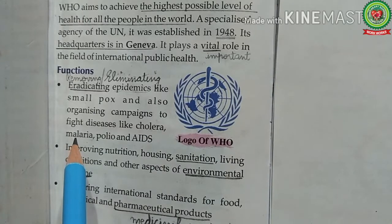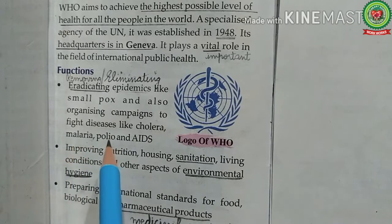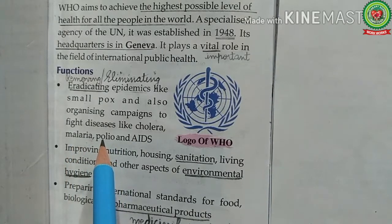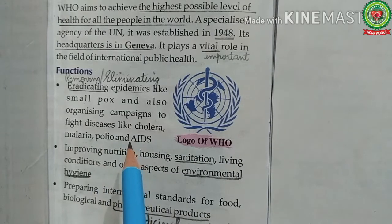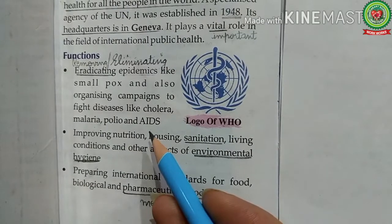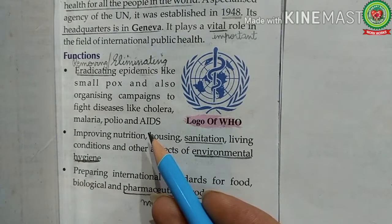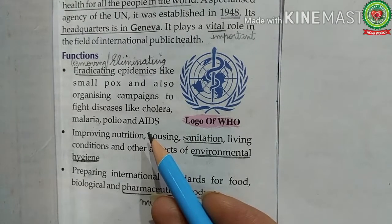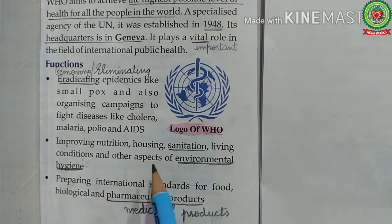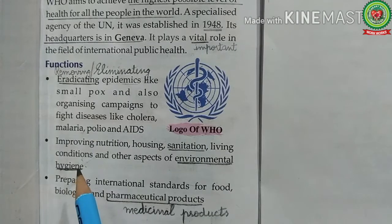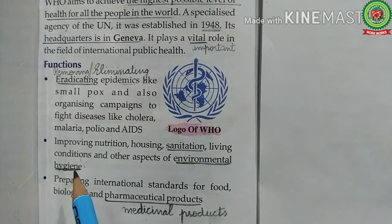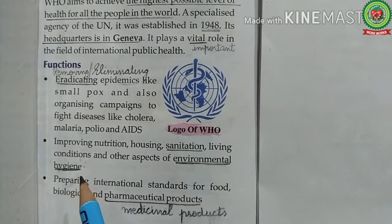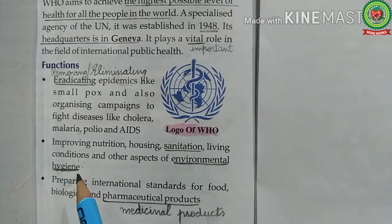Malaria is a mosquito-borne infectious disease affecting humans and other animals. Polio is a highly infectious disease caused by a virus; it attacks the nervous system and mainly affects children under five years of age. AIDS stands for Acquired Immunodeficiency Syndrome. WHO undertakes worldwide campaigns against diseases and encourages research and surveys in public health, improving nutrition, housing, sanitation, living conditions, and other aspects of environmental hygiene.